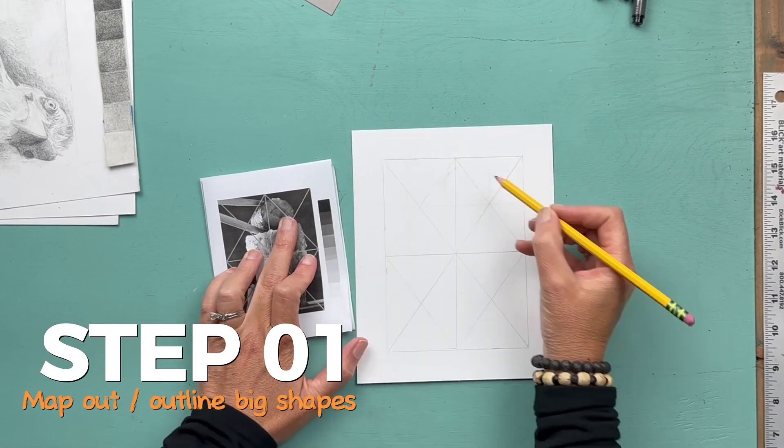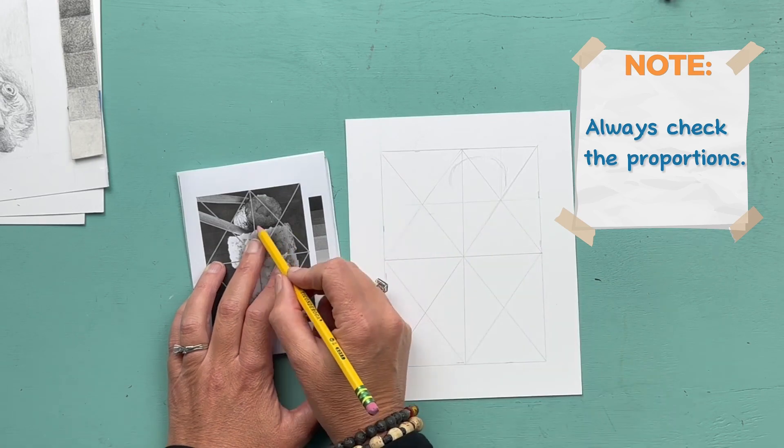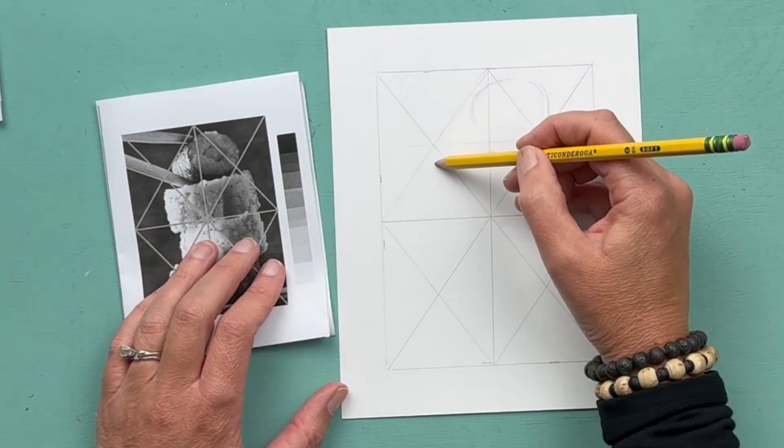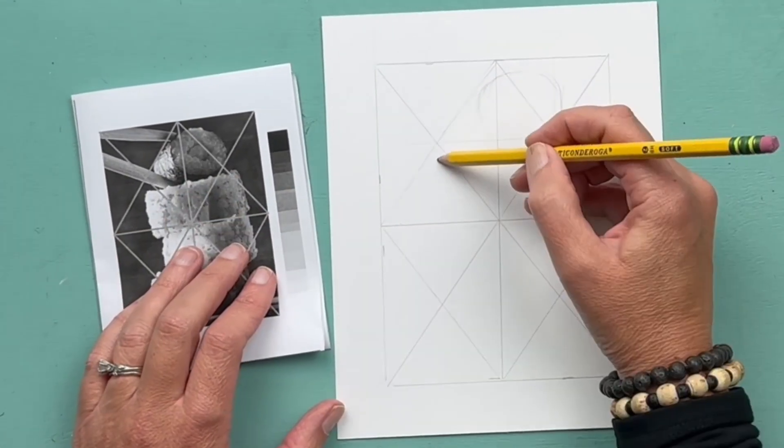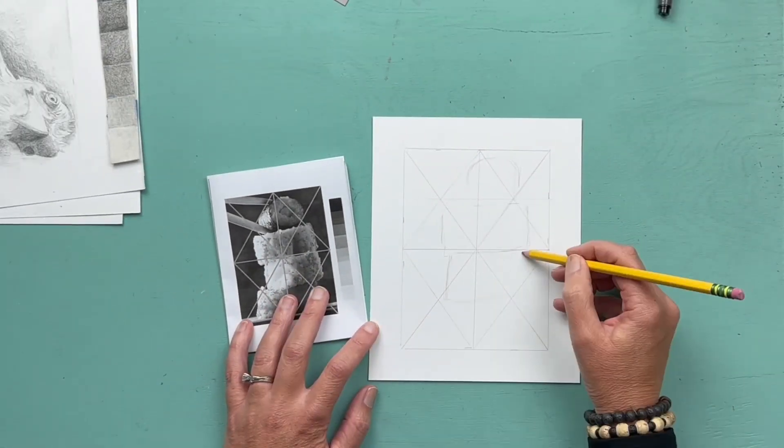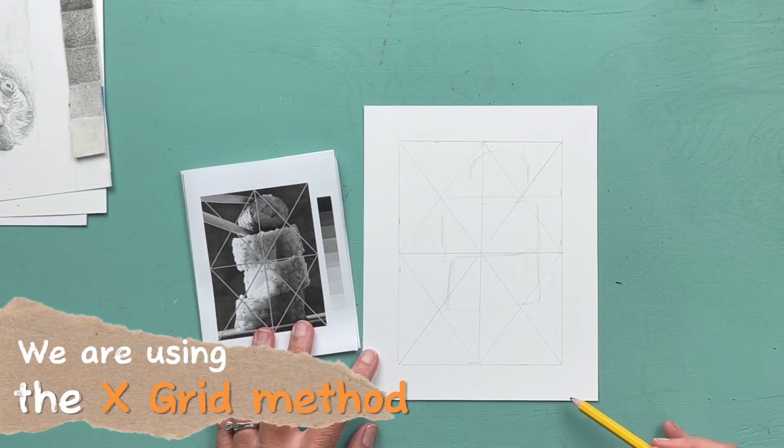You want to make sure whenever you start a drawing that you map out your proportions accurately. You always want to draw the larger shapes and get the proportion accurate before we move on to the smaller shapes.